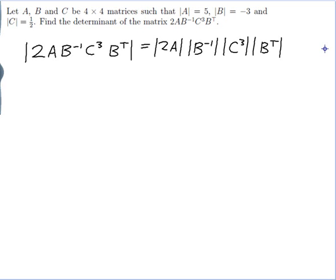So let me figure out what all of those determinants are. The determinant of 2A. Now I know that when I multiply one row of a matrix by 2 it will multiply the determinant by 2. So if I've multiplied all four rows by 2, I have to multiply by 2 four times.